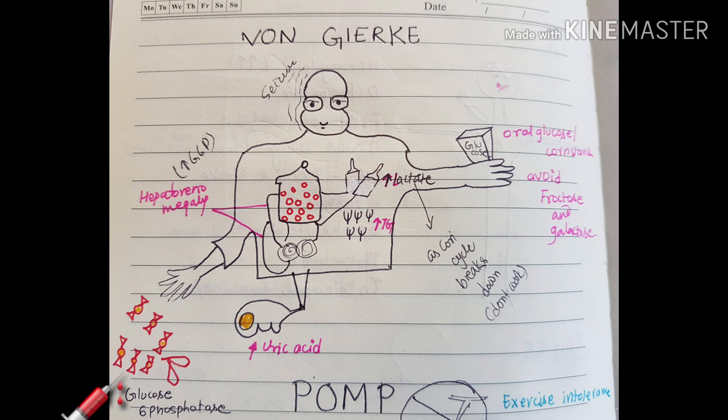Every time I talk about glycogen storage disease or lysosomal storage disease, the deficient enzyme will be represented by the thing falling from the right hand. Here, glucose-6-phosphatase is falling — so this is the deficient enzyme. There is increased glycogen in the liver and kidney, so you can see the hepatorenomegaly in the image.